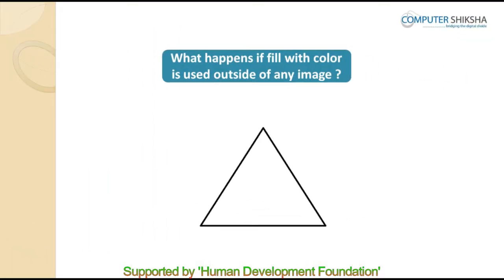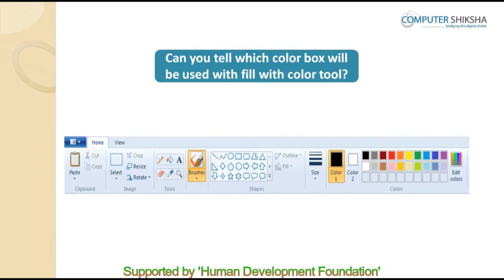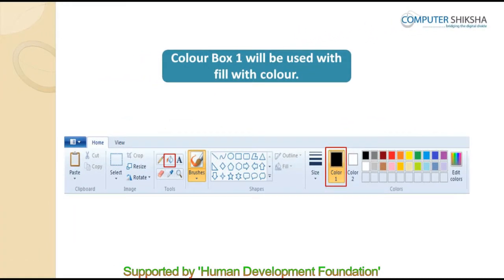What happens if Fill With Color is used outside of any image? If all lines of any drawing are not connected to each other and then one uses Fill With Color inside the drawing, the color gets filled outside of the image on the full sheet. Can you tell which color box will be used with the Fill With Color tool? Whenever we use Fill With Color, color box 1 is used.